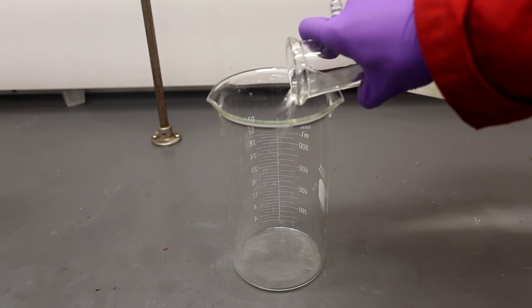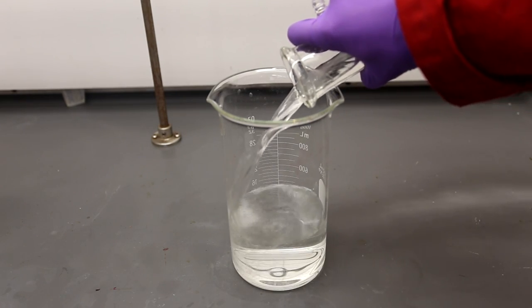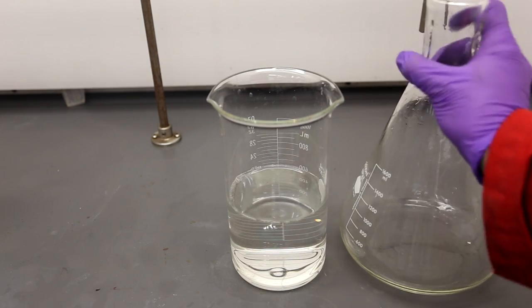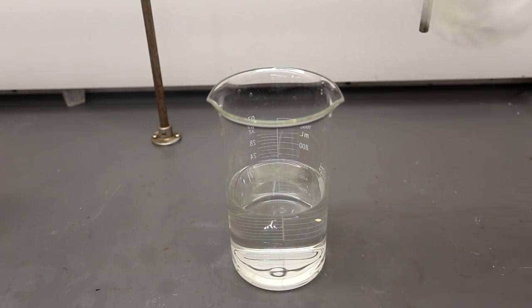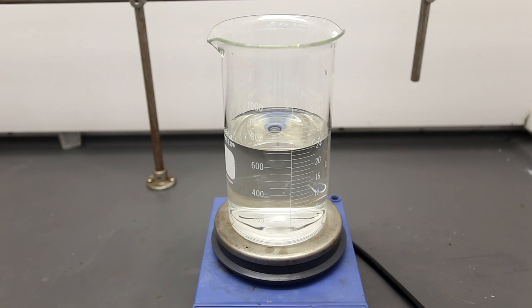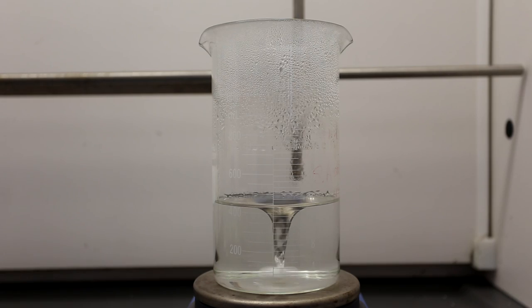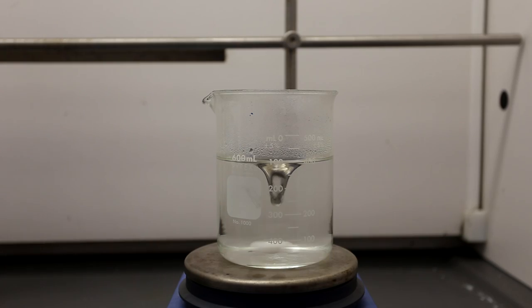The filtrate is transferred to a beaker and the water is gently boiled off. The Erlenmeyer flask was washed twice with about 50 milliliters of water. As the solution was boiled off, it was transferred to progressively smaller beakers. This step takes a long time. Be patient and just keep it at a low heat.